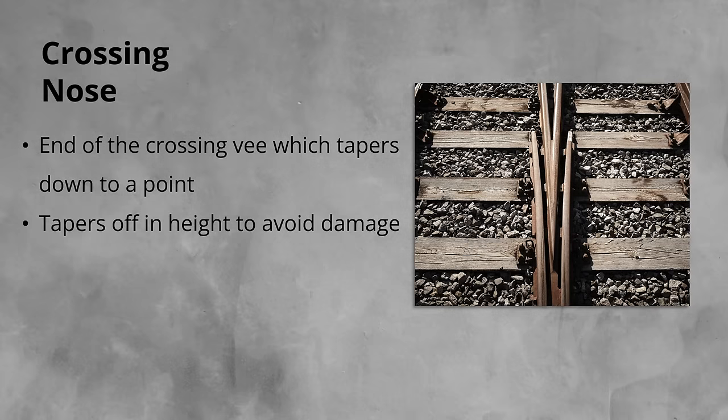Another key thing to remember about the nose of the crossing is measurements, such as the leg lengths, taken from the crossing nose. The wing rails are either side of the V. The space between the wings and V is known as the flangeway. This is, as the name suggests, the area the wheel flange passes through. The wing rails help, along with the check rails on the opposite rails, guide the train wheel and ensure it stays on the rail.